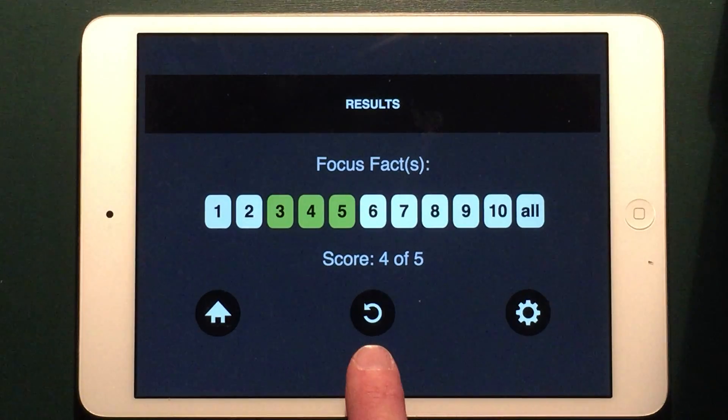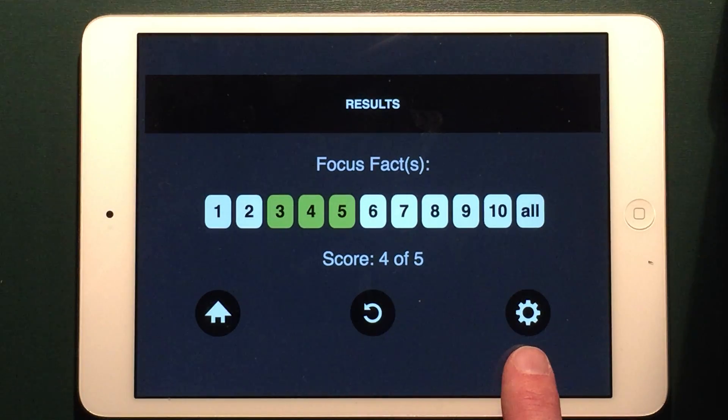You can return to the home screen, you can do this same set of practice problems again, or you can go back to the manage screen and change your focus facts, the number of problems, and the timer option. That's Math Mountain's Multiply and Divide.